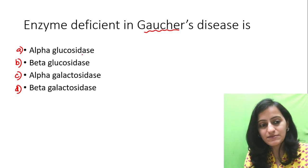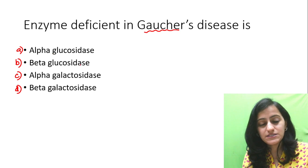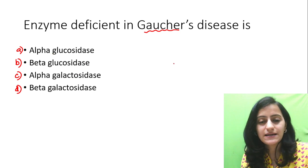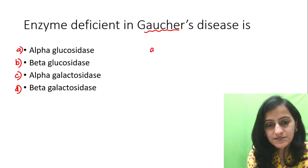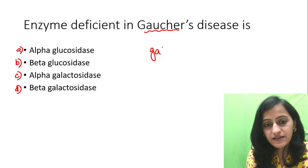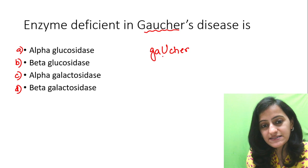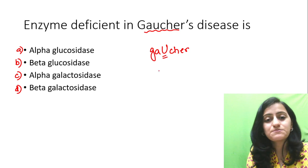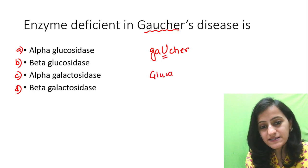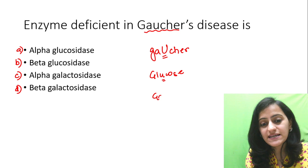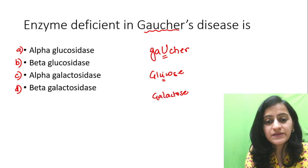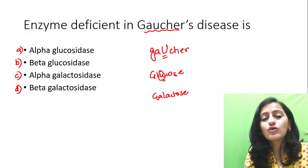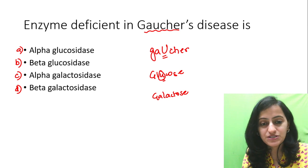So what is the enzyme deficient? Is it alpha-glucosidase, beta-glucosidase, alpha-galactosidase or beta-galactosidase? An easy trick to remember this: when we write Gaucher's disease, it has a U in its spelling. So U is present in glucose, not in galactose. Galactose is all A's. So glucosidase is the enzyme deficient.